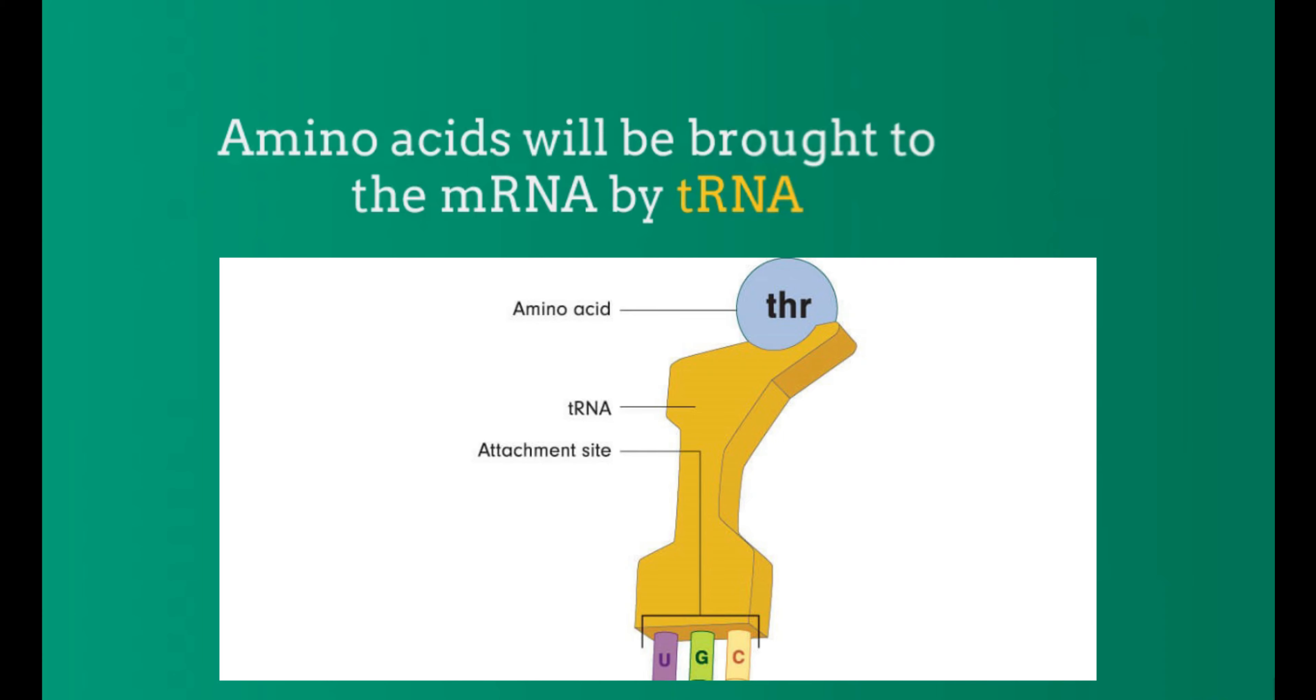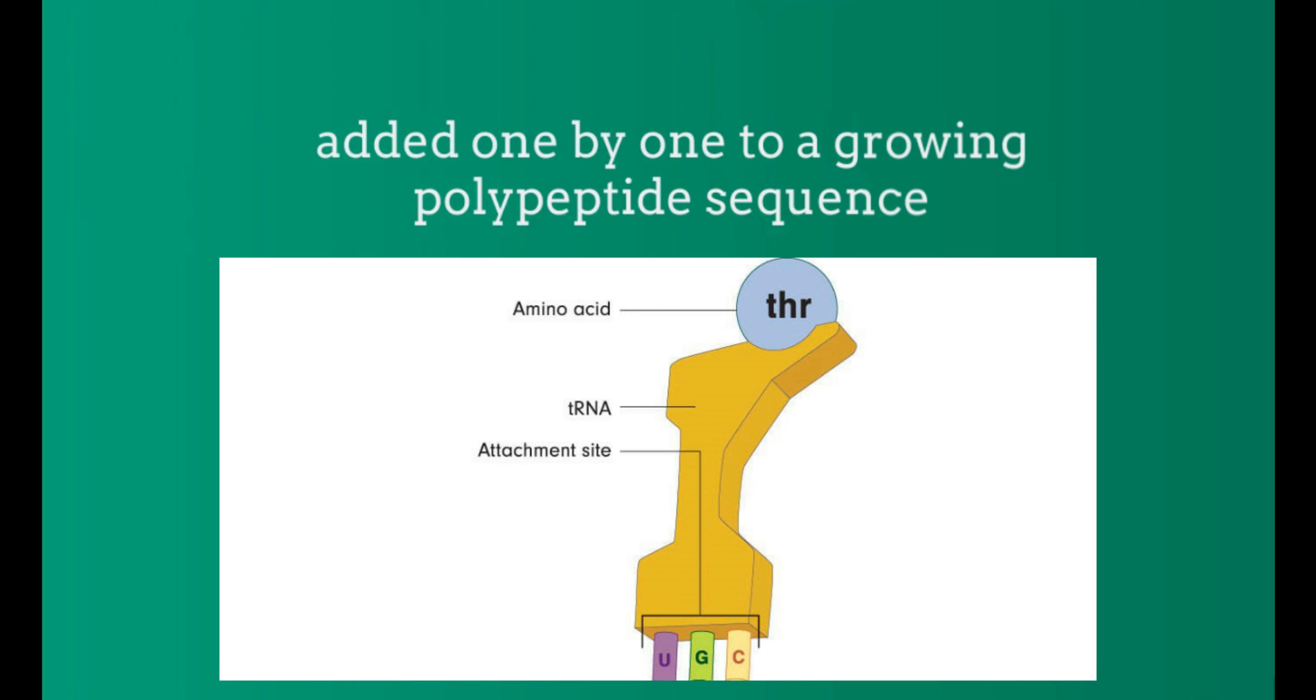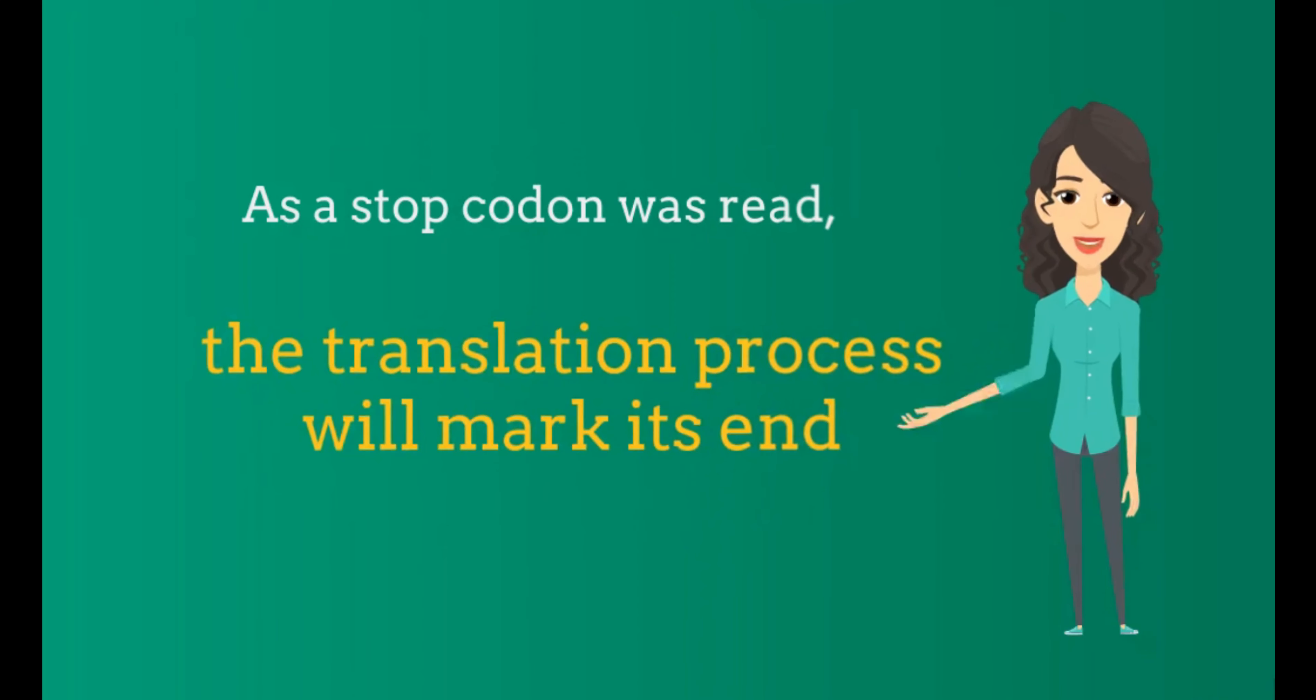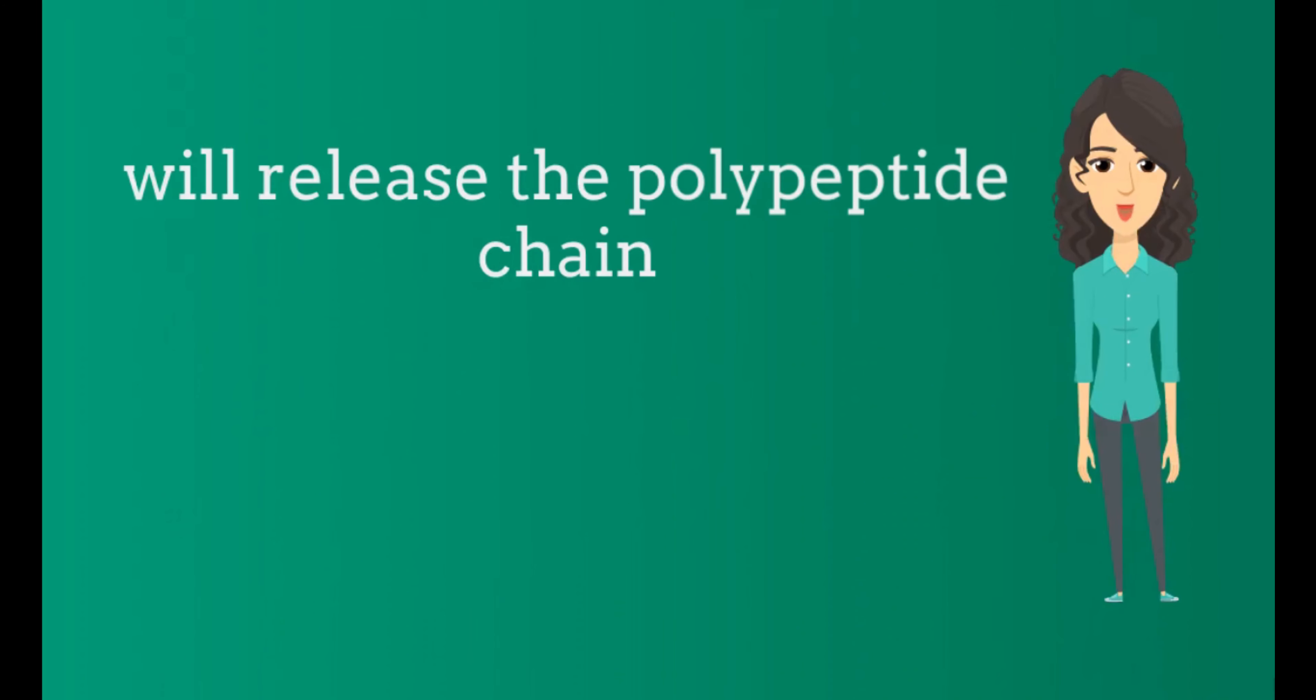Amino acids are brought to the mRNA by tRNA and added one by one to a growing polypeptide sequence. When a stop codon is read, the translation process marks its end and releases a polypeptide chain.